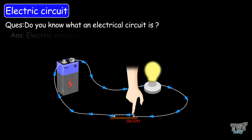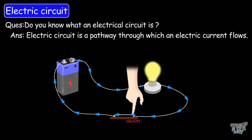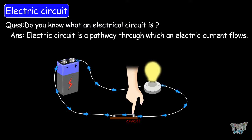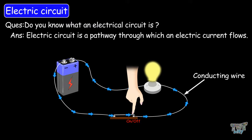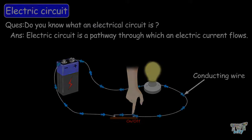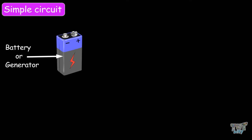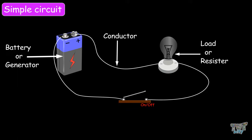An electric circuit is a pathway through which an electric current flows. A circuit pathway is usually a conducting wire. Let us first discuss the simple electric circuit. A simple electric circuit consists of a battery, conducting wires, and an electrical device to operate on.